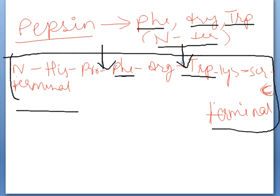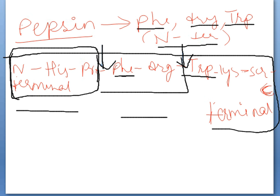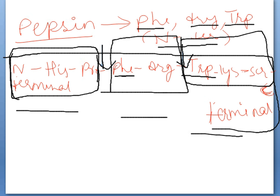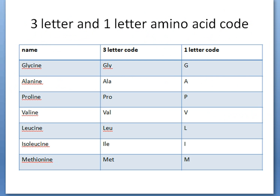After cleavage, we get a tripeptide and two smaller peptides — one, two, three small peptides in total. This is one type of peptide, these two are another type, and this is the tripeptide.